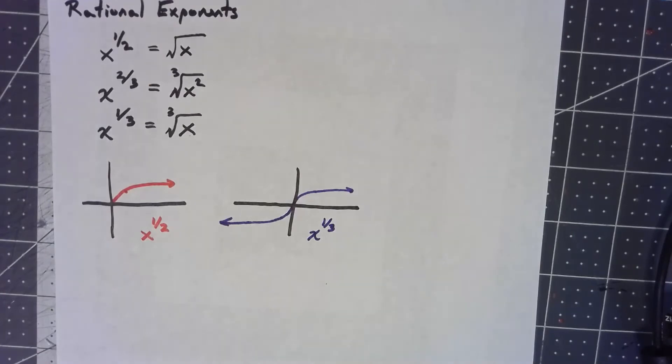Now the thing about those two graphs, just like when we talked about the graph of x squared being very similar to the graph of x to the fourth, x to the sixth, x to the eighth, any positive even power, it's a similar kind of thing here. These graphs look very similar to a bunch of others.